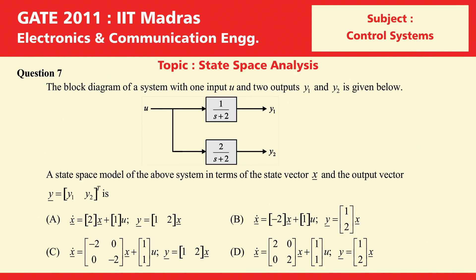Question 7, Gate Electronics 2011. The block diagram of a system with one input U and two outputs Y1 and Y2 is given. This is a single input multiple output system. A state space model of the above system in terms of the state vector X and the output vector Y is to be determined, with four state variable representations given as options.